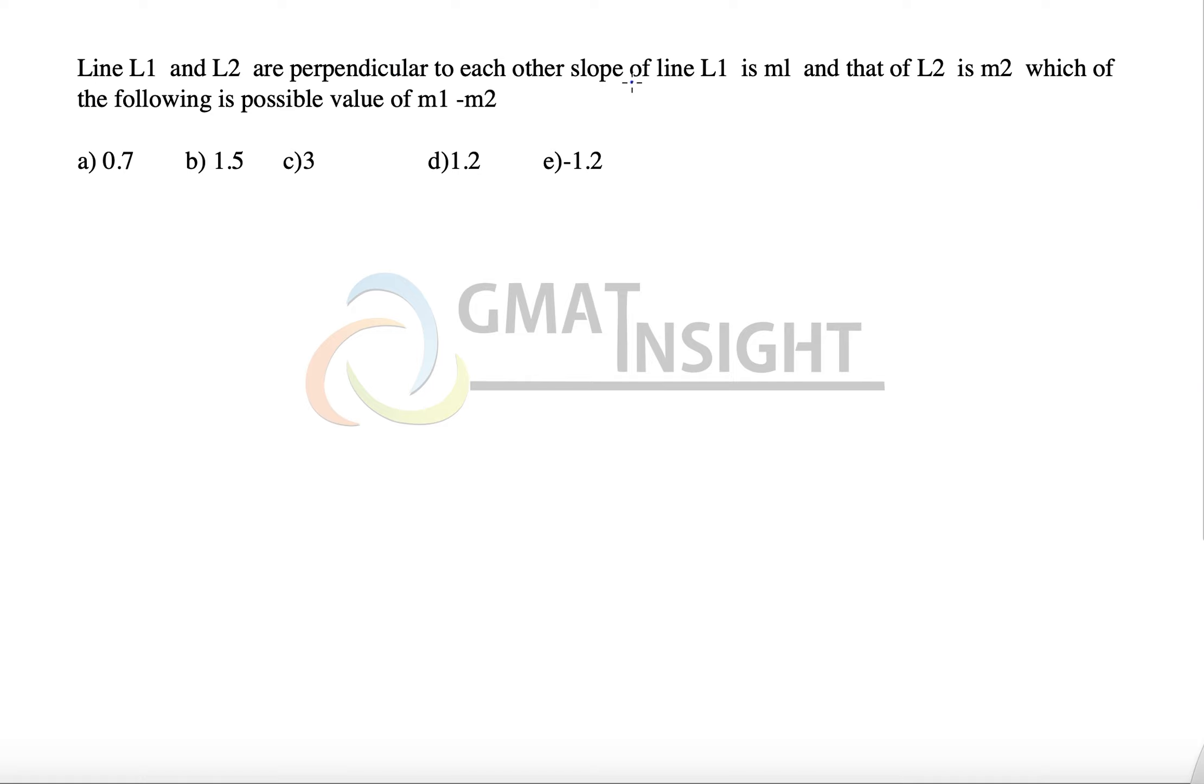Line l1 and l2 are perpendicular to each other and their slopes are m1 and m2 respectively. Which of the following is the possible value of m1 minus m2?